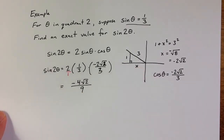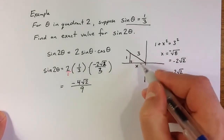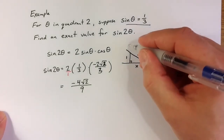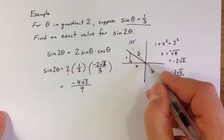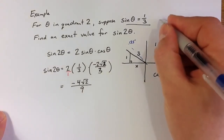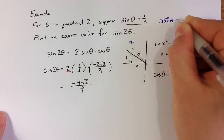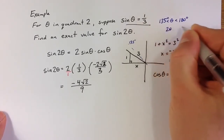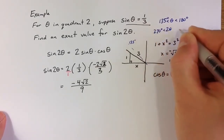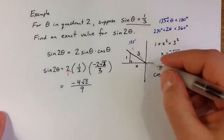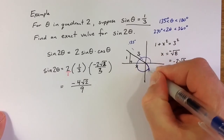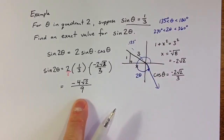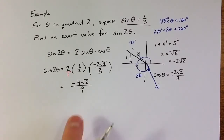We can check our work by thinking about where this angle is. Since 1 third is a little less than the square root of 2 over 2, theta has to be a little beyond 135 degrees — so theta is between 135 degrees and 180 degrees. Doubling that, 2 theta is between 270 degrees and 360 degrees, which puts 2 theta in quadrant 4. Because we're in quadrant 4, sine of 2 theta should be negative, which is consistent with our answer.